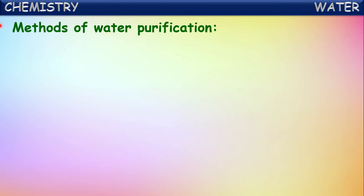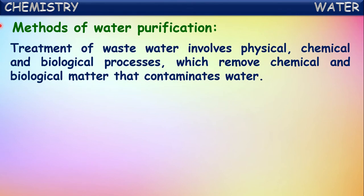Methods of purification - let us see how water is made pure. Treatment of wastewater involves physical, chemical, and biological processes which remove chemical and biological matter that contaminates water. This removal of biological and chemical materials can be done by physical methods, chemical methods, and biological processes.